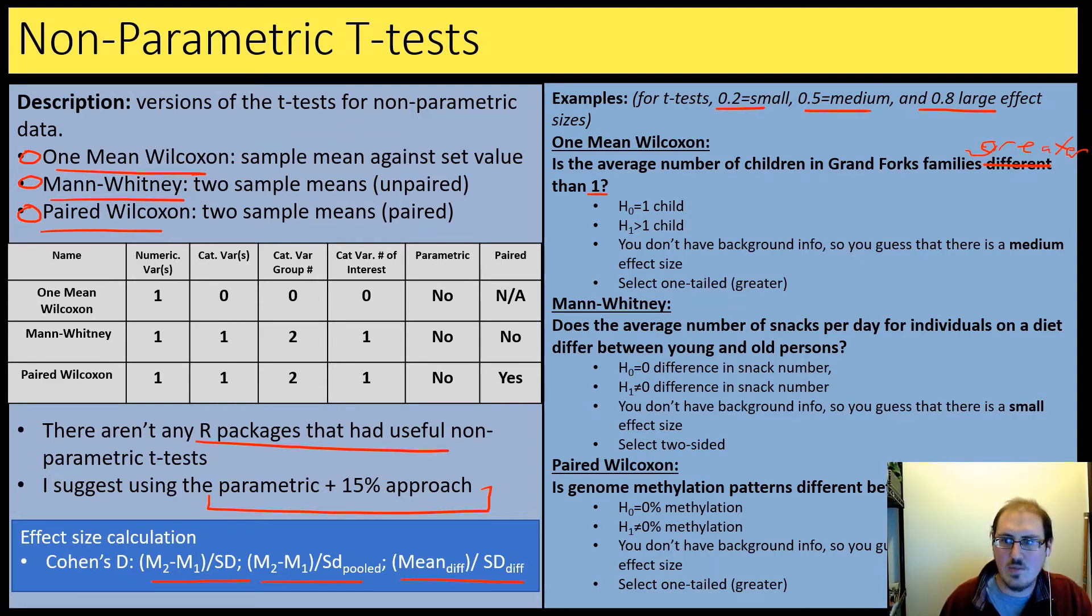So we're going to get some medium effect and select one tailed. For the Mann-Whitney, so two different groups, two sample means. The average number of snacks we're wondering per day is that difference between young and old person are two groups. So the null is there zero difference and the alternative is there's not zero difference. So we're going to guess a small effect size here and two side because we just asked if it was different.